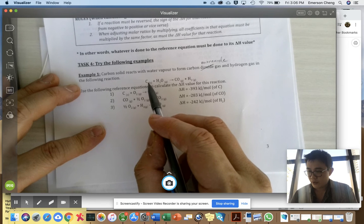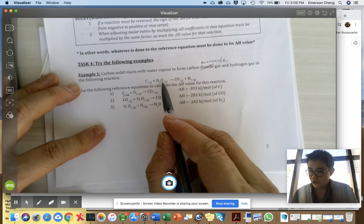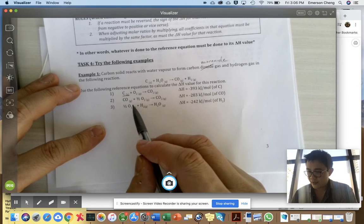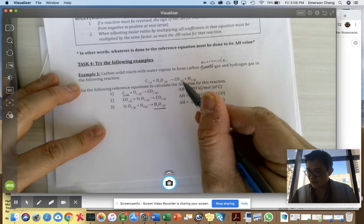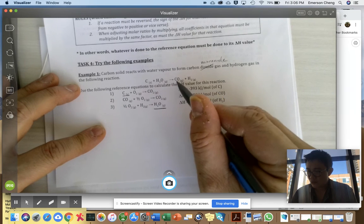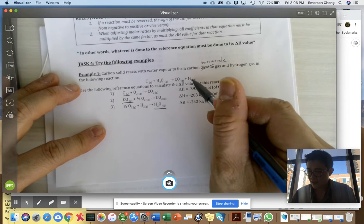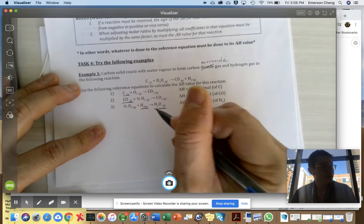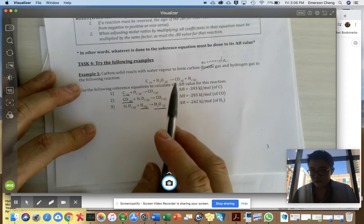So for example, you want carbon, so you underline carbon here. You want water gas, so you look at it, water gas is here. CO2 gas, no, carbon monoxide gas, you have carbon monoxide gas and hydrogen gas, so you have hydrogen gas here. Now that's the first step.